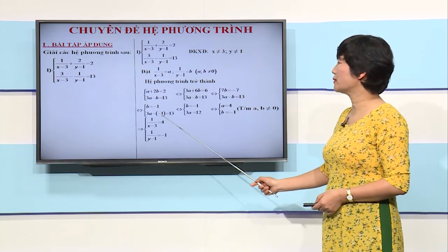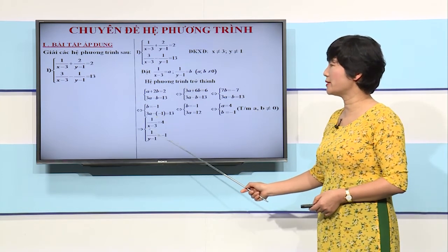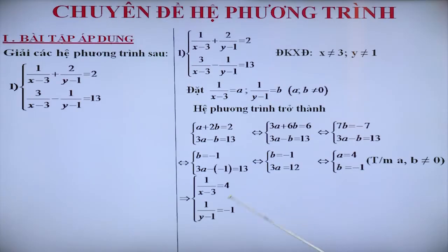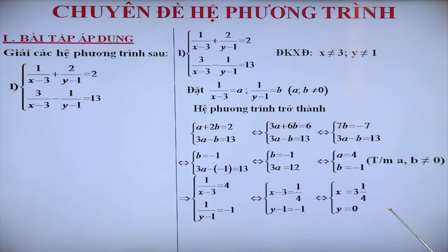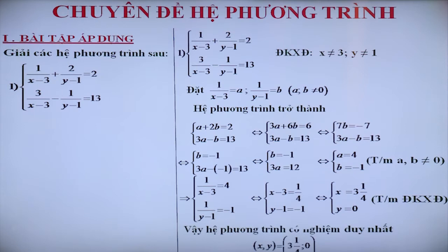Do đó, chúng ta tìm được 1/(X trừ 3) bằng 4 và 1/(Y trừ 1) bằng âm 1. Tiếp tục giải hệ phương trình mới, chúng ta tìm được X bằng 3 và 1/4, Y bằng 0. Các giá trị tìm được này thỏa mãn điều kiện xác định của phương trình. Do đó, chúng ta kết luận hệ phương trình có nghiệm duy nhất (X; Y) = (3 và 1/4; 0).